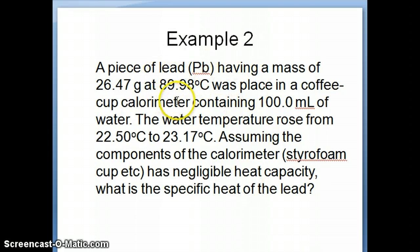Here's the first example on calculating delta H. It's really very similar to what you've done before for the other calculation of energy. So in this case we're saying that we have a piece of lead. It has a mass of 26.47 grams. It has a very high temperature. It's placed in a coffee cup calorimeter.